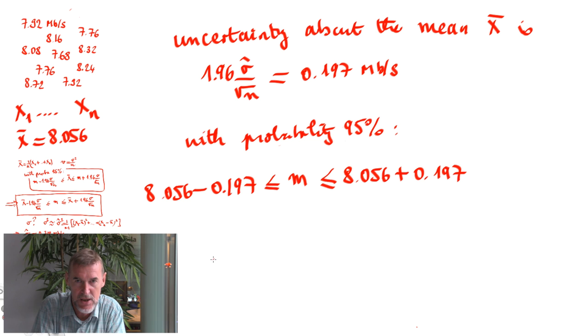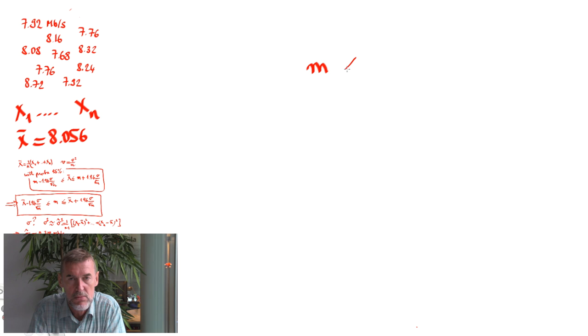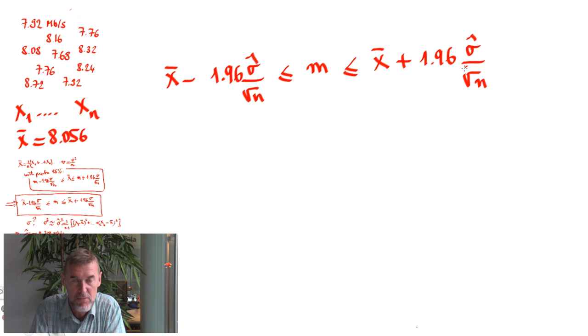So we have obtained a formula for computing the confidence interval for the mean. First, we compute the sample mean x-bar. Then we need to compute an estimation of the standard deviation, sigma hat. And we can say that the mean of the data, the theoretical mean, the mean of the unknown simulator, the mean we would see if we would know everything about nature, is given by the formula x-bar plus or minus 1.96 sigma hat divided by square root of n.